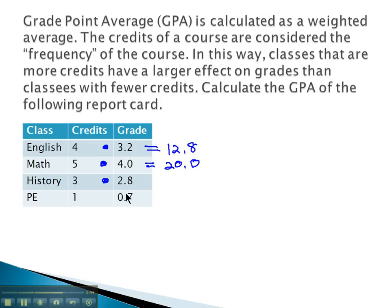History, 3 times 2.8 gives us 8.4. PE, 1 times 0.7 gives us 0.7.